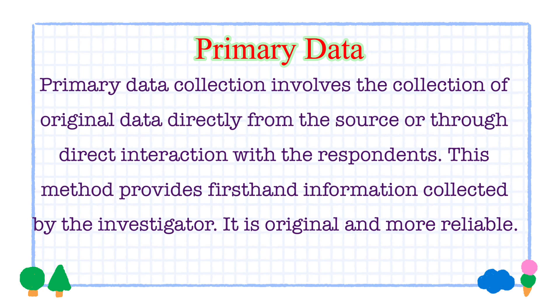Once you've decided to collect data, the next step is to find out the source of data. If you decide to interview your friends to collect data, then the collected data will be called primary data. Primary data collection involves the collection of original data directly from the source or through direct interaction with the respondents. This method provides first-hand information collected by the investigators, and it is original and more reliable.